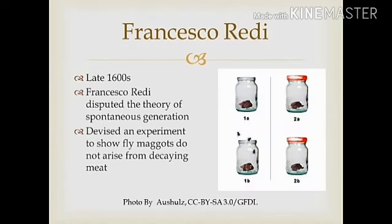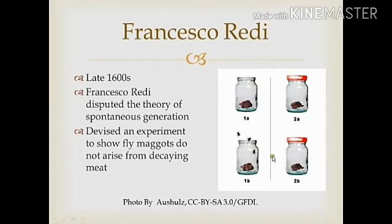In the 1600s, Francisco Redi devised an experiment to disprove that decaying meat gave way to maggots. He placed decaying meat in the bottom of several jars. Some jars were left open, as you can see here to the left, and other jars were sealed with a lid to prevent the entry of flies, as you can see here on the right. The next day, Redi found the jars which had access to flies had maggots developed on the decaying meat, whereas those in which the jars were sealed, no maggots developed.